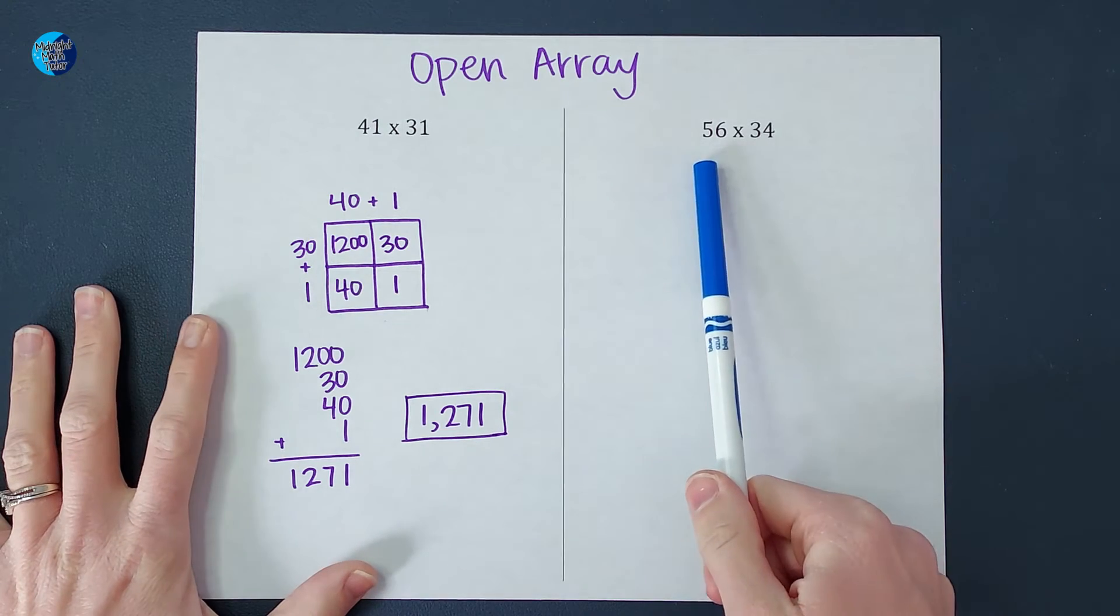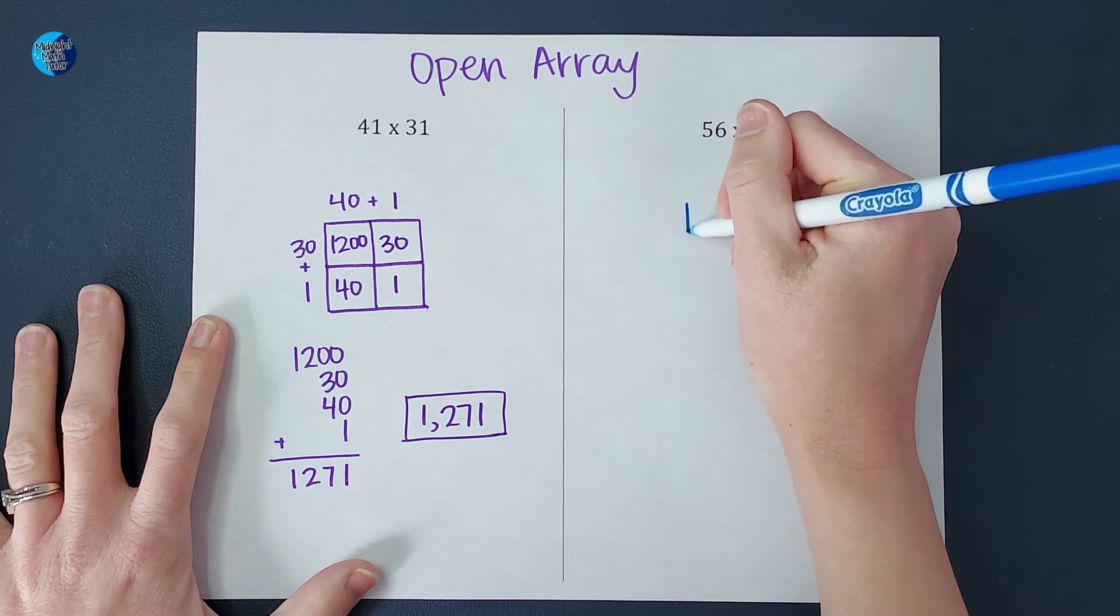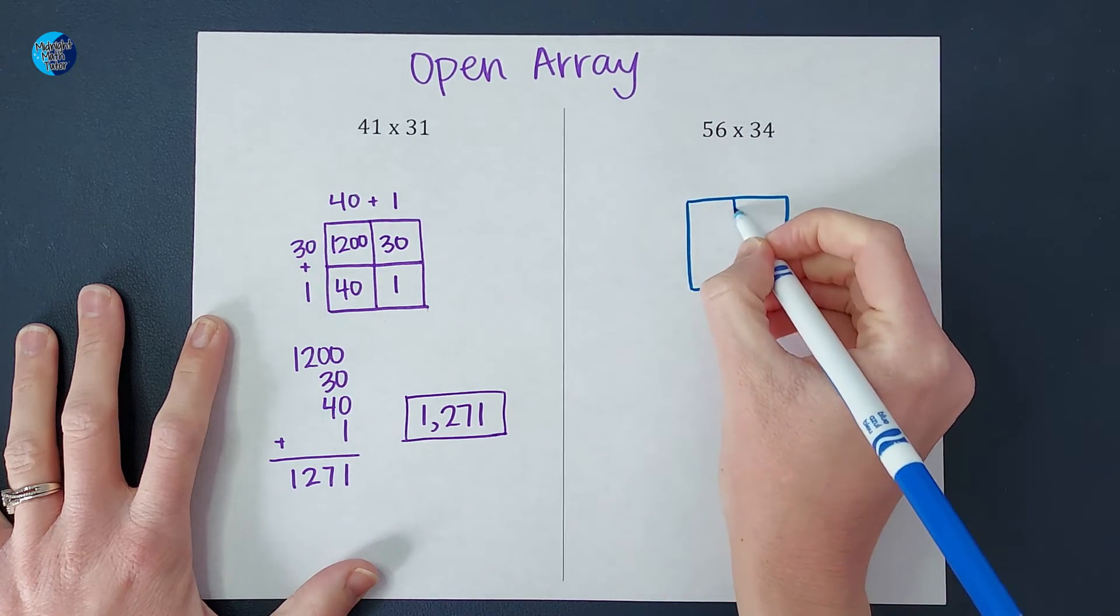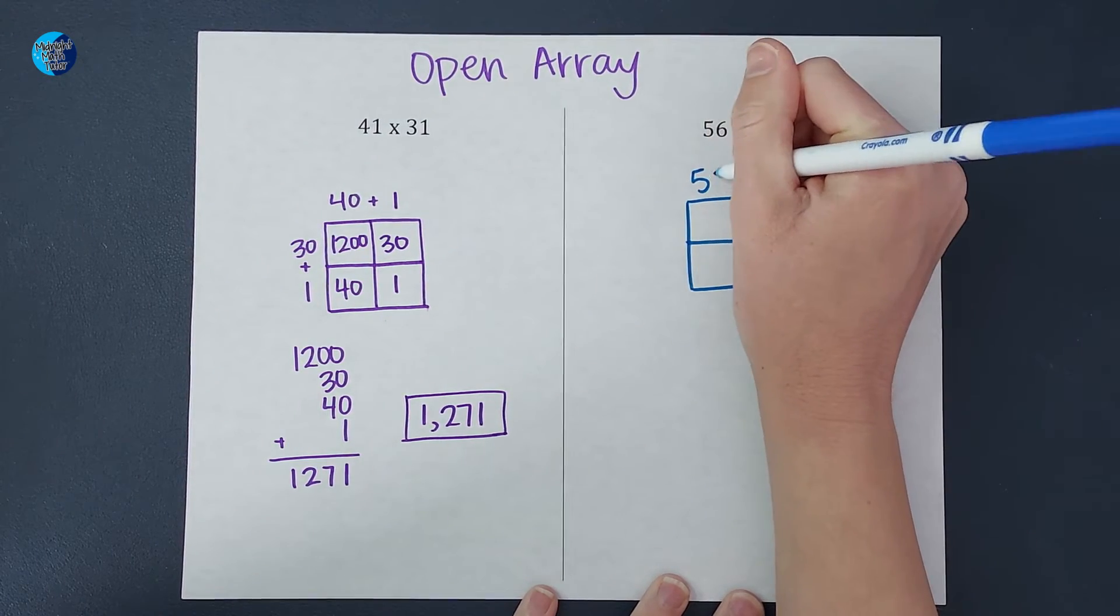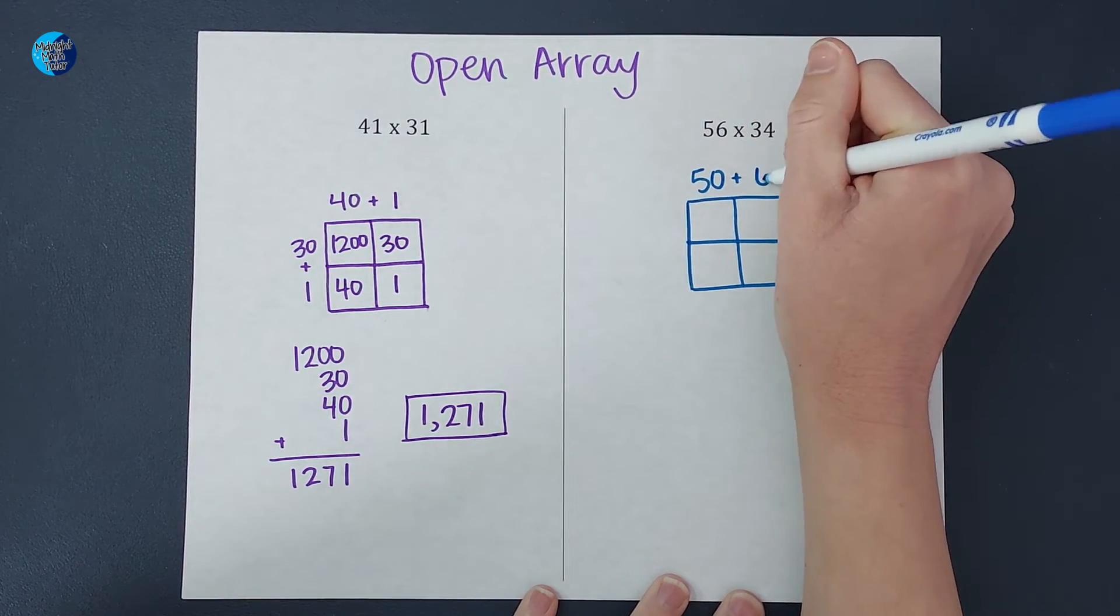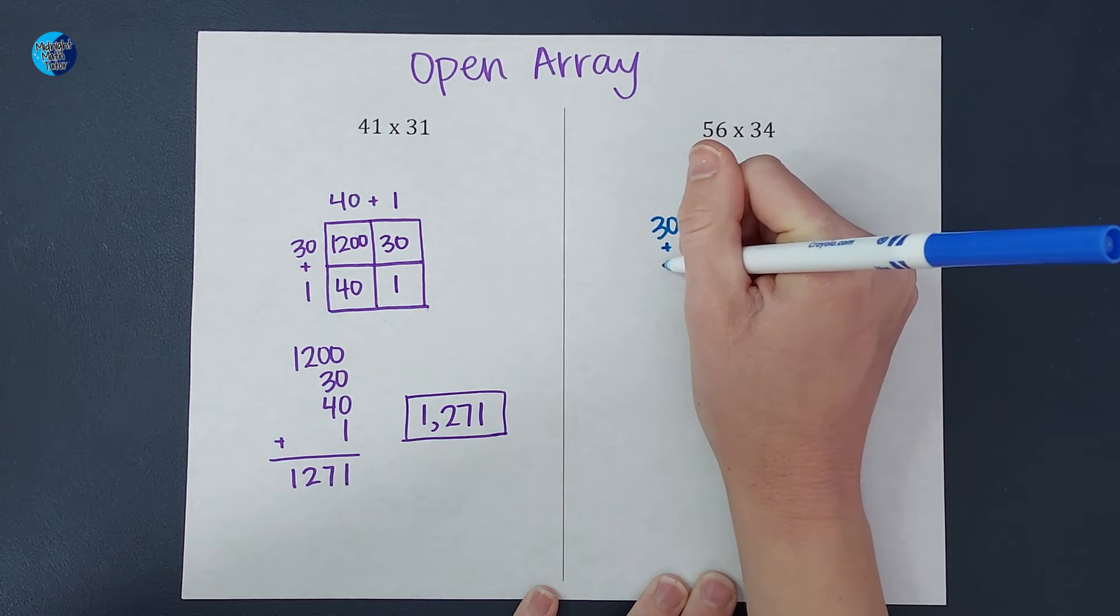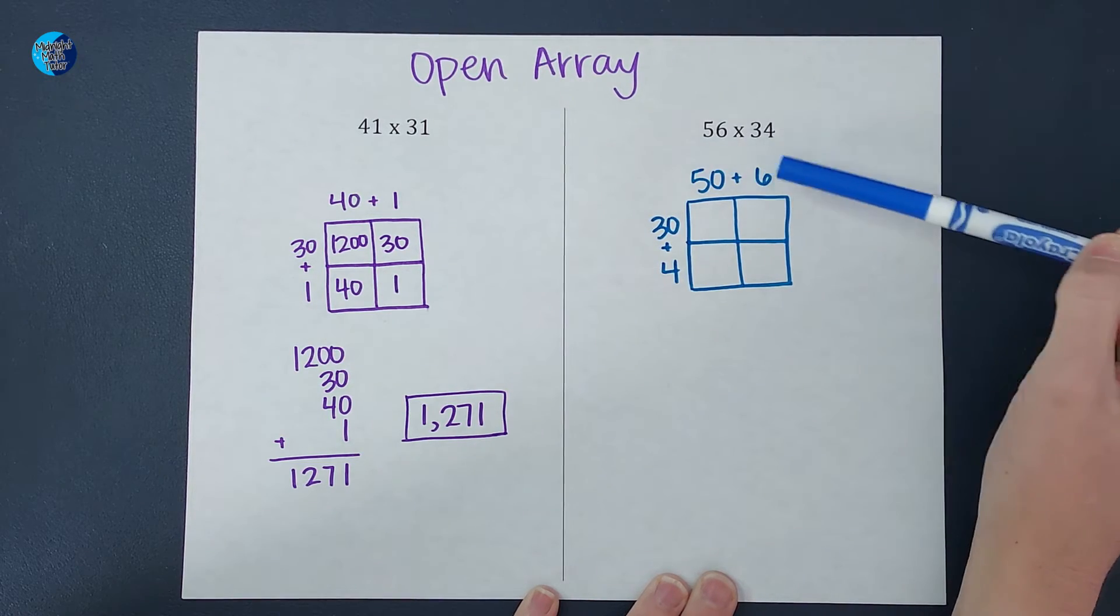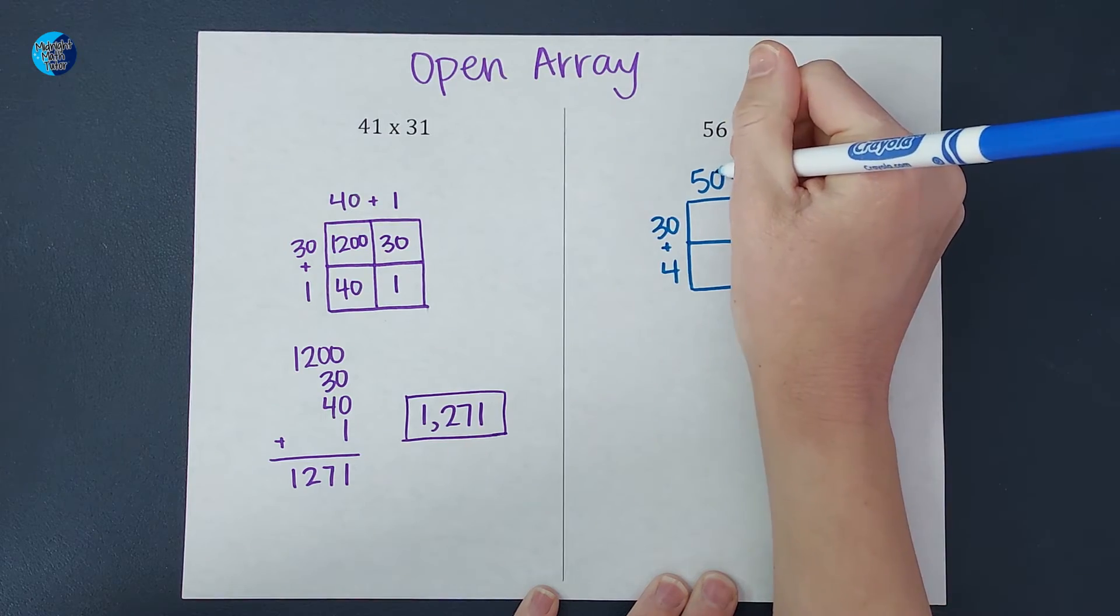Let's do it one more time. Again, it's two two-digit numbers, so I'm going to draw a box that is two by two. On top, I'm going to have 56, but I'm going to write it as 50 plus six. And on the side, I'm going to have 34 written as 30 plus four. Also, if you wanted to write the 30 plus four on top and the 50 plus six on the side, totally fine.